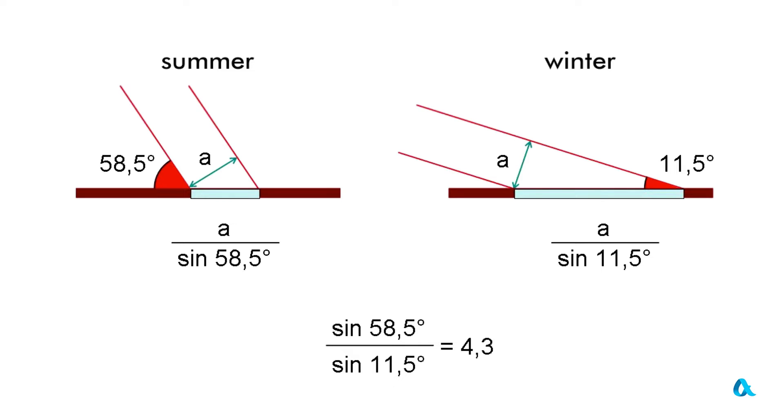Correspondingly during the summer season, the Earth's surface at midday is illuminated in Novosibirsk 4.3 times more effectively compared to the illumination during the winter season. And it is evident that summer will be warm and winter will be cold.